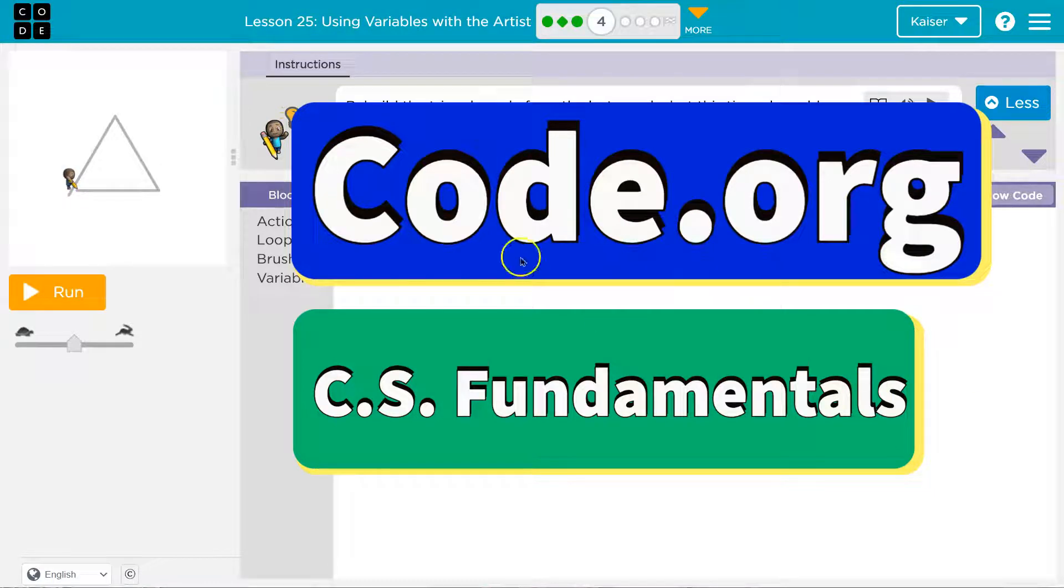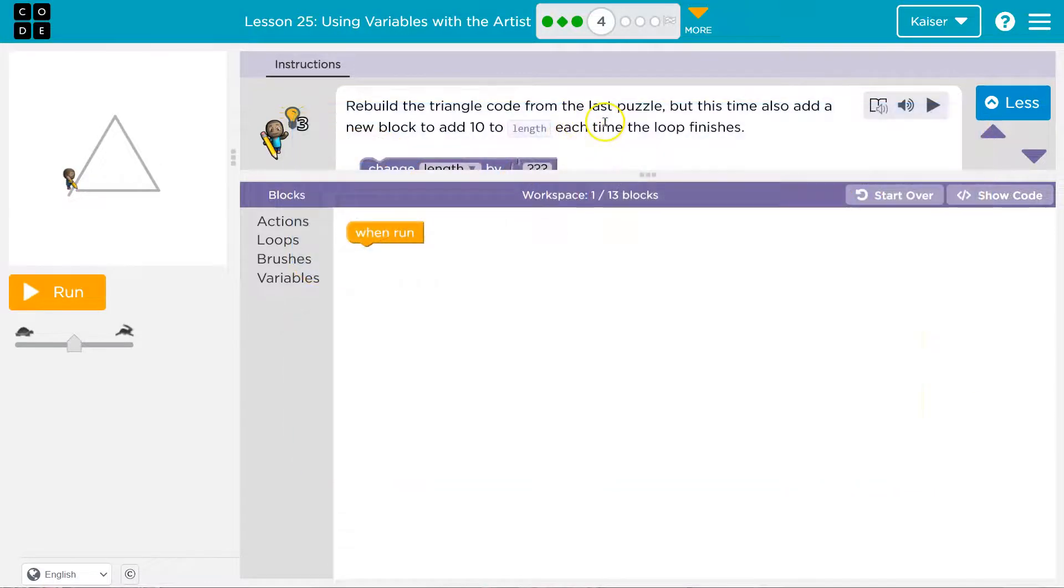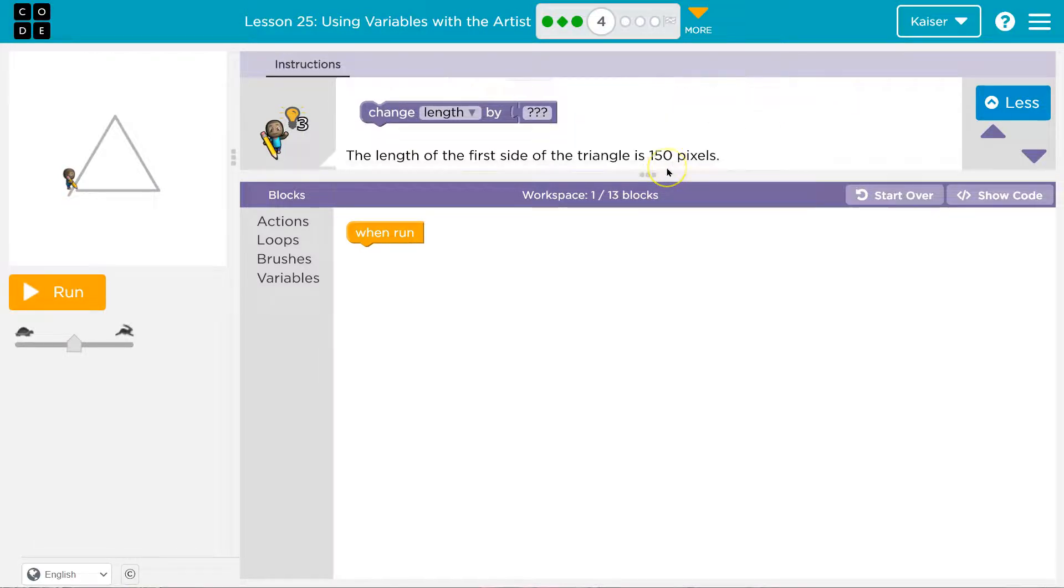This is code.org. Let's see what we have. Rebuild the triangle code from the last puzzle. So hopefully you were in the last puzzle and you know what it's talking about. But this time also add a new block to add 10 to the length each time the loop finishes.